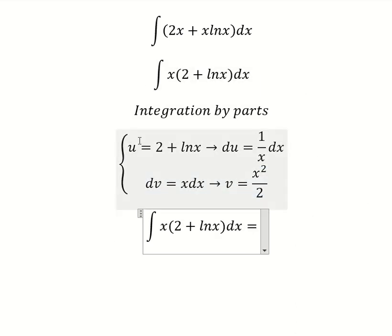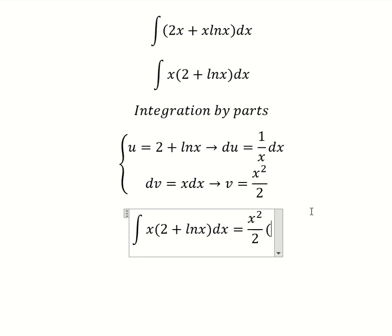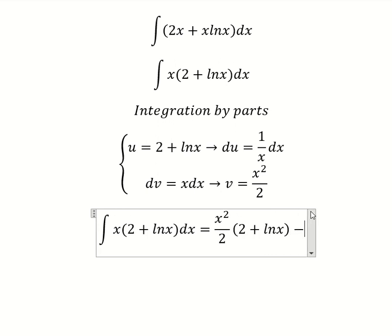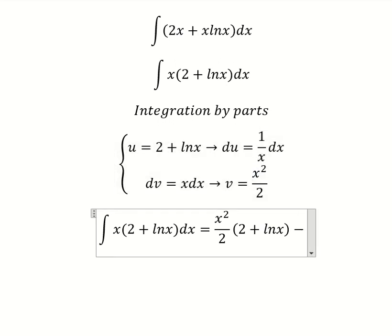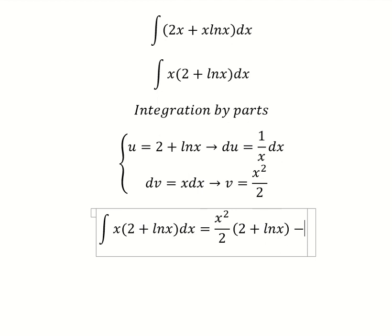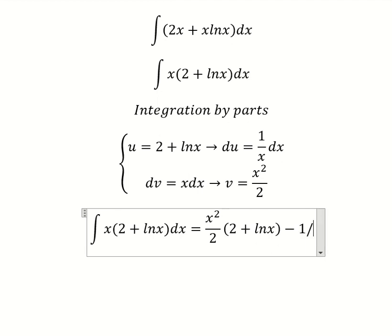So we have u multiplied by v minus the integral of v du. So x squared divided by x, you get x, and I will put 1 over 2 outside.